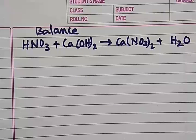In this video we will learn how to balance a chemical equation. So let us take this chemical equation. This equation describes nitric acid reacting with calcium hydroxide gives calcium nitrate and water. This is not balanced.